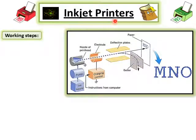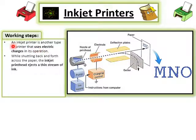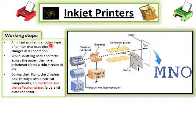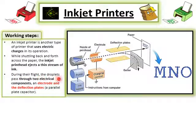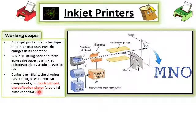Now we discuss inkjet printers. An inkjet printer is another type of printer that uses electric charges in its operations. While shuttling back and forth across the paper, the inkjet printer head ejects a thin stream of ink. During their flight, the droplets pass through two electrical components: first, an electrode, and second, deflection plates — similar to a parallel plate capacitor.